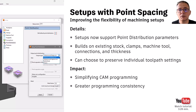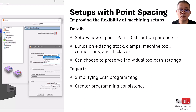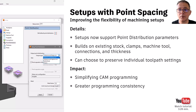Continuing work started a few releases back, PowerMill 2024.0 includes an additional update to machining setups. Previous releases allowed definition of stock, clamps, machine tools, connections and thickness settings to be applied to all toolpaths within a setup. This latest release improves on this with the addition of point distribution settings, simplifying CAM programming as users have fewer settings to manage and remember. If a calculated toolpath is moved into or out of a setup, the user can choose to update it to use the setup's settings or keep them unique to that toolpath, saving time and improving programming confidence and consistency.